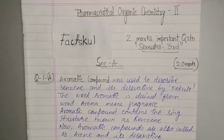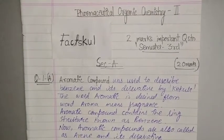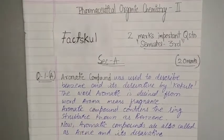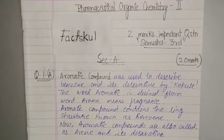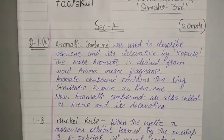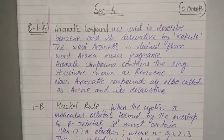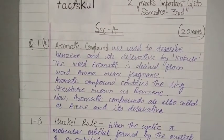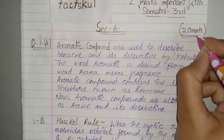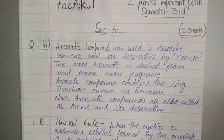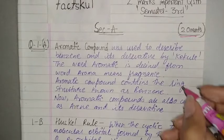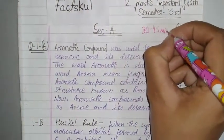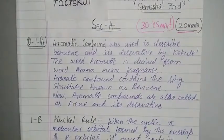Hey there, welcome to Factskul. Today we will talk about two marks important questions from semester third, subject pharmaceutical organic chemistry second. These are some important questions from Section A which you have to attempt and this is the compulsory part. Section A has total 20 marks and 10 questions which are compulsory. I would advise you to complete this in 30 to 45 minutes.